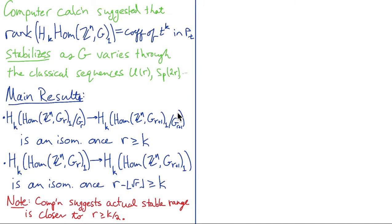And again, those ranks are just the coefficients of t to the k in this Poincaré polynomial. You can plug these into a computer. It's not a hard problem to work out the matrices involved, and they get big quickly, so you can't do that much computation. But it appeared to us that these were stabilizing. For example, as you let the Lie group G vary through a classical sequence like the unitary groups or the symplectic groups.